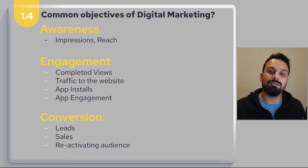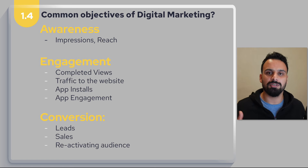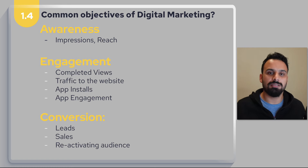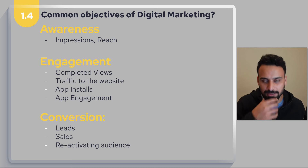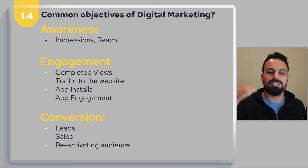Then there are conversion objectives. A real estate company wants to generate leads — people who come to their website, download the brochure, leave their phone number, and can be contacted. Sales is another conversion objective — for e-commerce companies like Amazon or any small e-commerce site, all they want from digital marketing campaigns is to generate sales on their website with a guaranteed return on their budget.